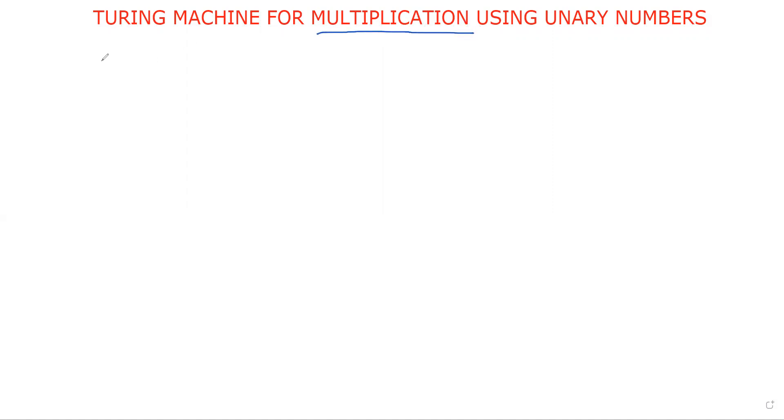Hi friends, welcome to our channel. In the previous session we discussed the subtraction function using the unary number system. You already know what the unary number system means — every number is represented by using all ones or by using all zeros according to your requirement. Now we will move to this session: multiplication of two numbers, that is x into y.